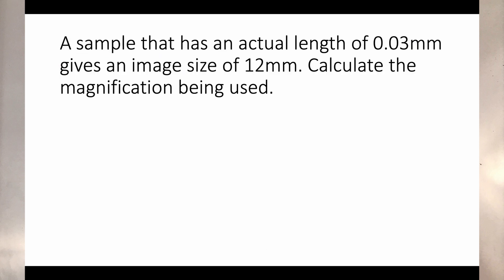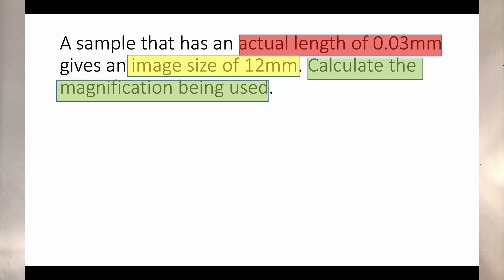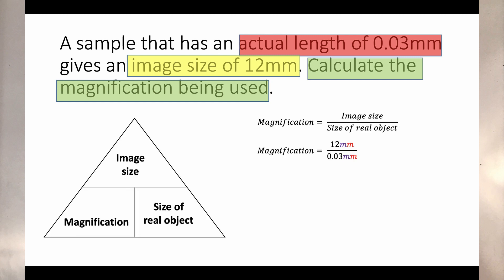Now try this example. Highlight what they've given you, what you need to work out. Underline, whatever. Write out your equation. Sub your numbers in. Rearrange. Oh, we don't need that here. Calculate the ting.